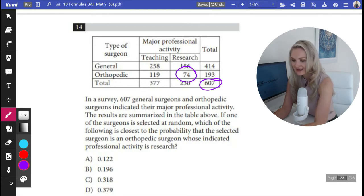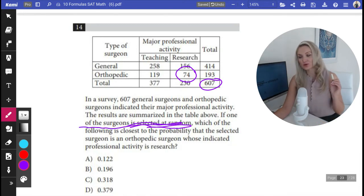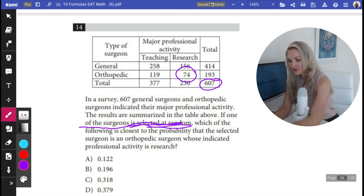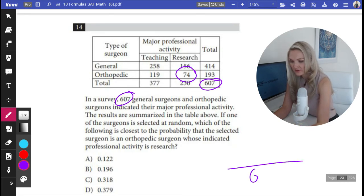The question is, if one was selected at random, one of the surgeons were selected at random. This is the place where you know your total. Your total is the total number of surgeons and they give it to you in the chart. They say here. So that is your total number of outcomes because if they can select any surgeon at random, they're choosing from 607.